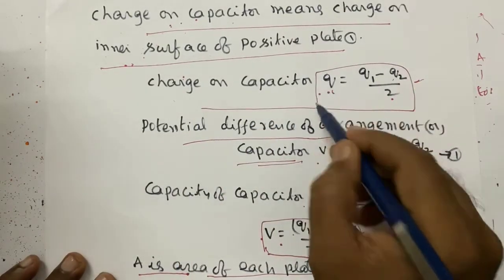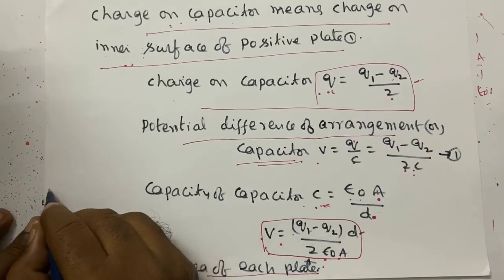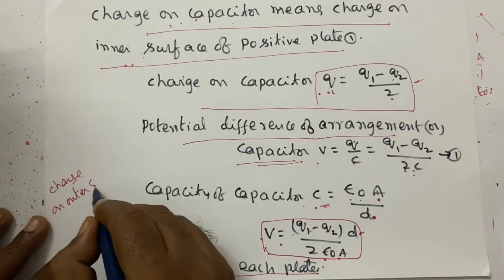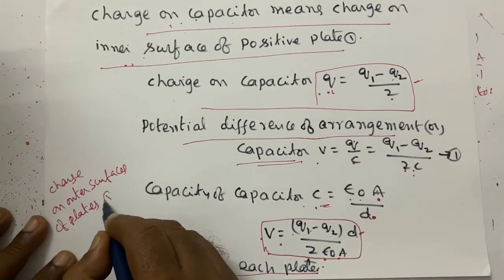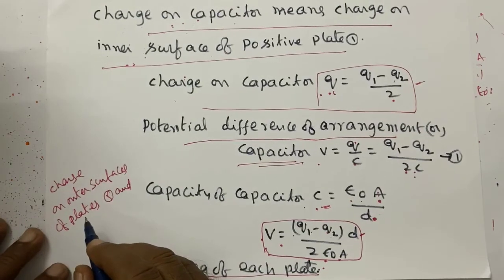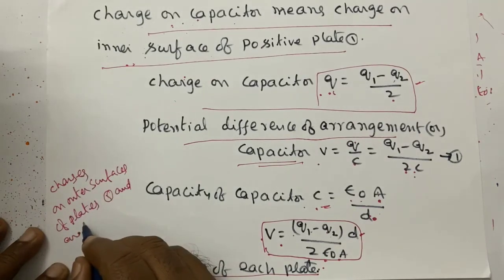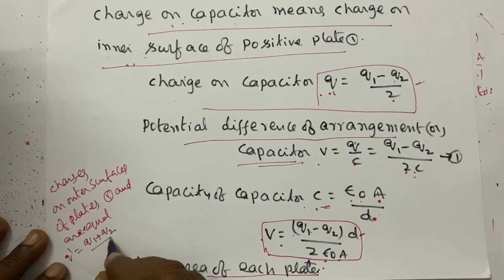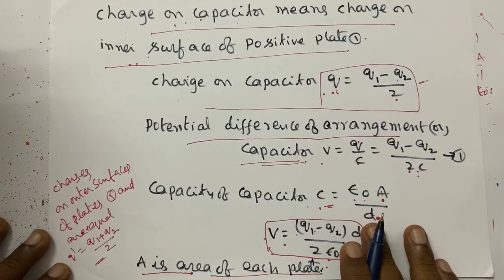We also need the charge on the outer surfaces of plates 1 and 2. The charges on the outer surfaces of both plates are equal. This outer surface charge Q' equals (Q1 plus Q2) divided by 2.